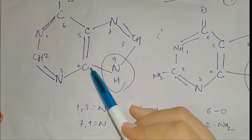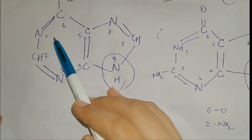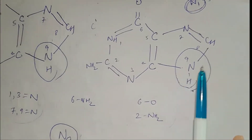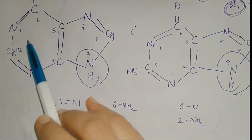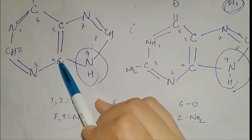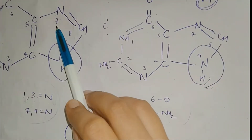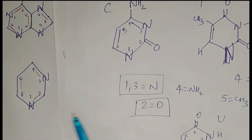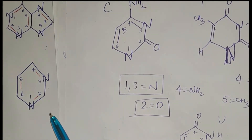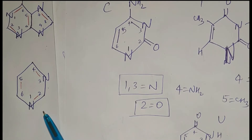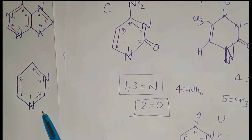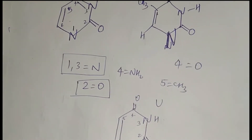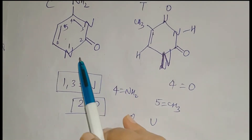One thing to also remember is the positions of double bonds. In case of adenine and guanine, the positions of double bonds are the same: between 1 and 6, 5 and 4, 2 and 3, and 7 and 8 in both cases. Now let's look at the structure of pyrimidines — cytosine, uracil, and thymine. This is the basic structure of pyrimidine: it is a single-ring structure, slightly modified in each case.